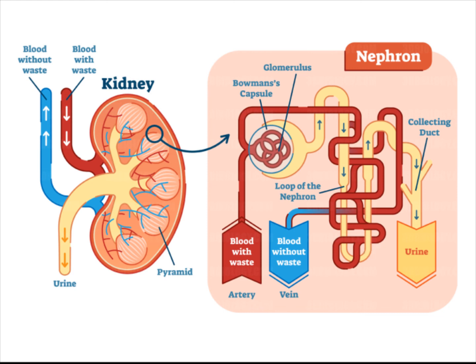Secretion occurs when waste that did not get filtered goes from capillaries into the proximal and distal convoluted tubule and becomes urine. Substances secreted include urea, creatinine, uric acid, hydrogen, ammonium, and potassium ions.